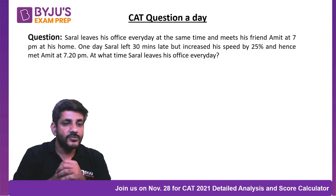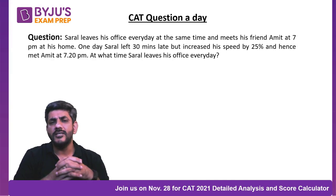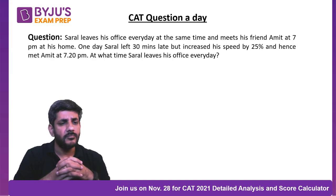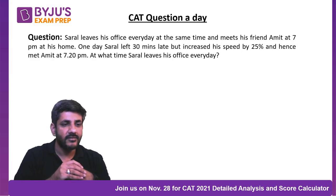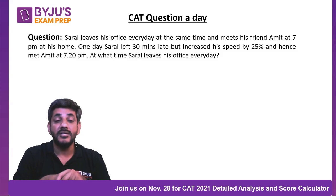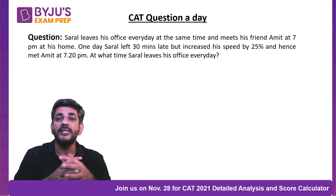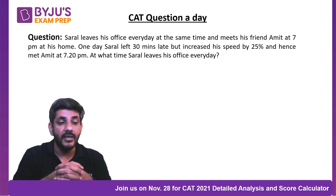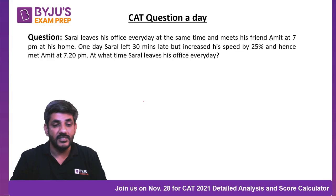Now I'll move to the question of the day. Here is the question on your screen — a very common type of question you can see in CAT exams from TSD. Saran leaves his office every day at the same time and meets his friend Amit at 7 PM at his home. One day, Saran left 30 minutes late but increased his speed by 25%, and hence met Amit at 7:20 PM. At what time does Saran leave his office every day?